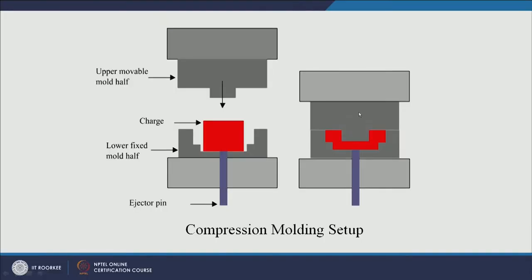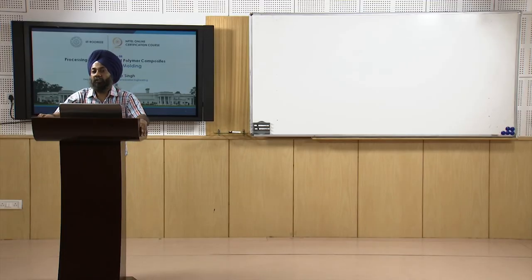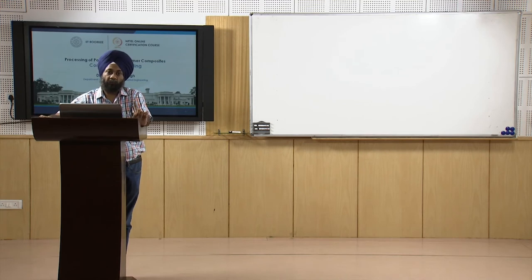We can control temperature, pressure, and holding time. Depending on the type of plastic used as raw material, these three parameters will change — the temperature control, holding time, and the applied pressure will all vary accordingly.